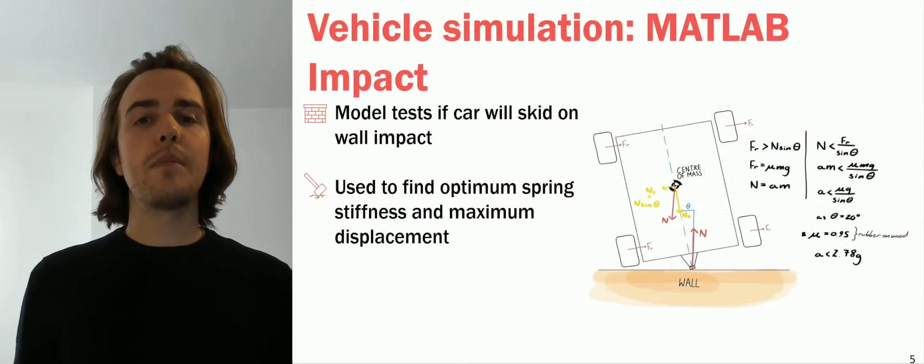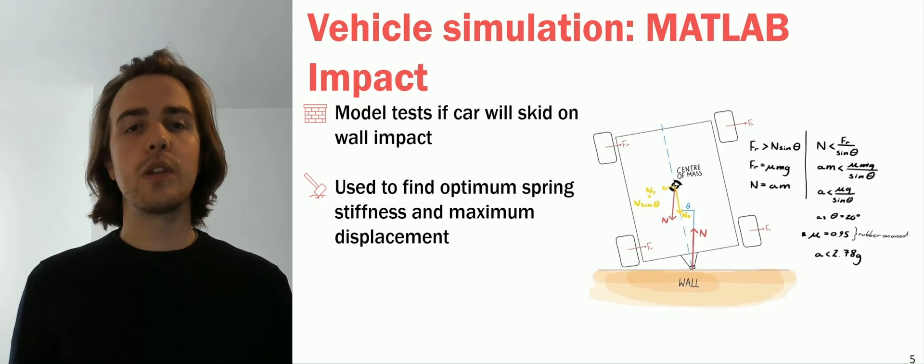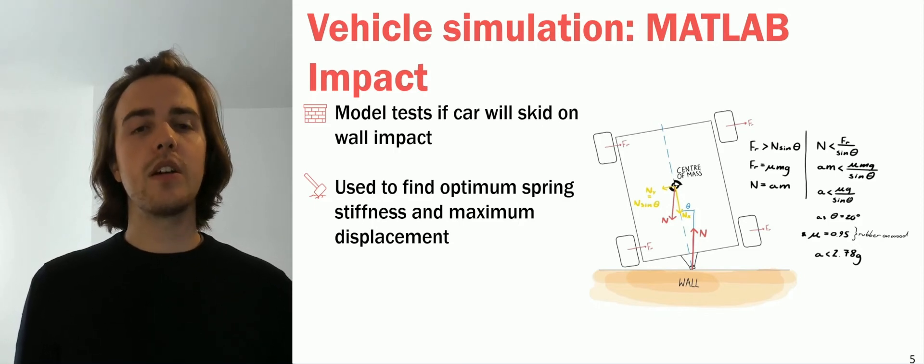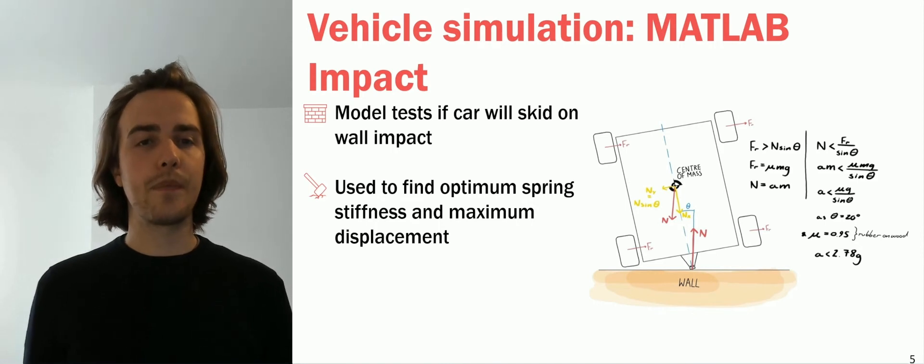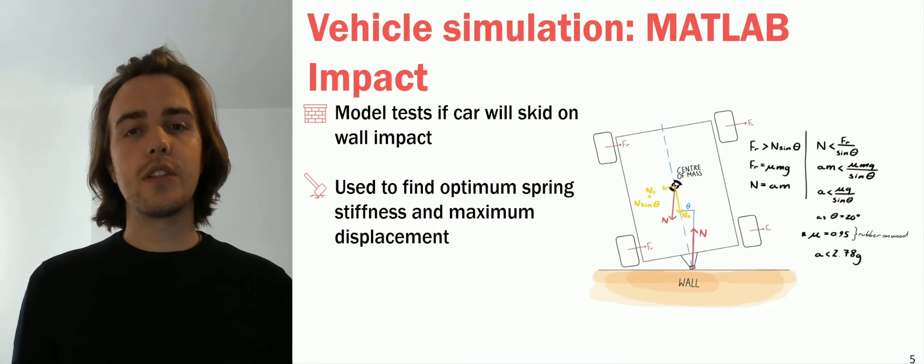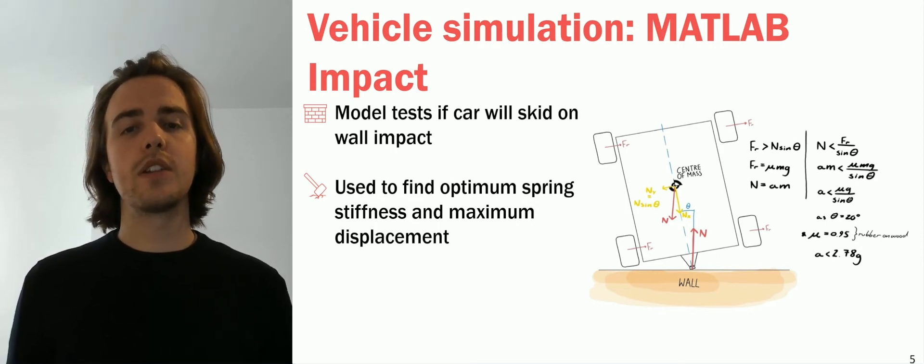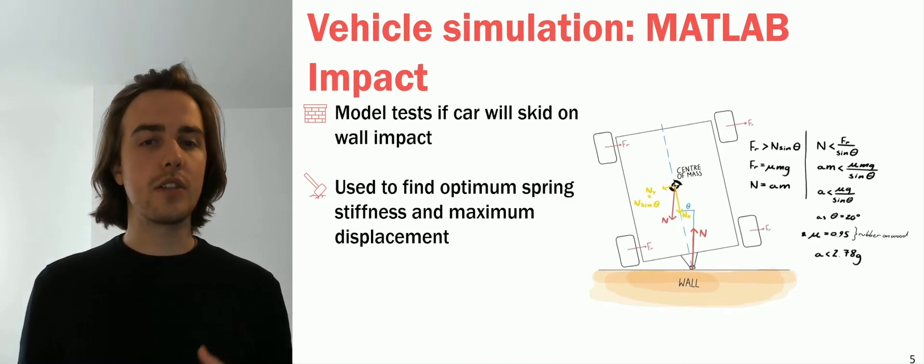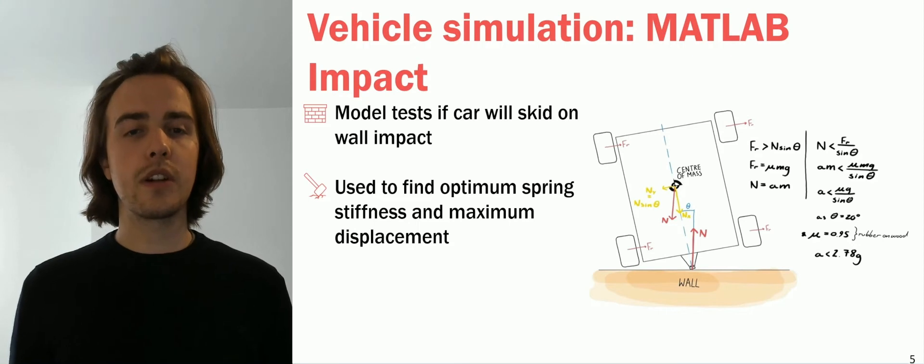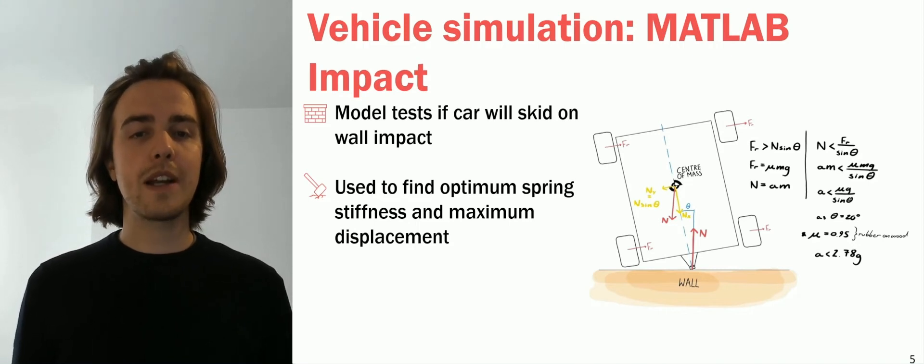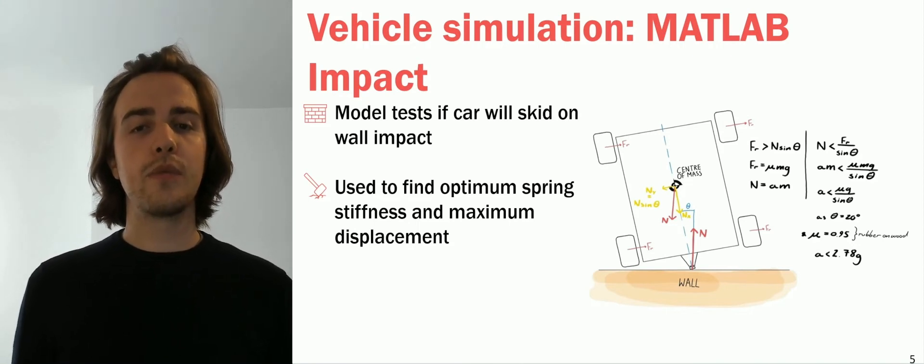We also used the MATLAB model to study the impact of the vehicle with the wall. We wanted to prevent the car from skidding on impact, which would misalign it causing it to miss the target. We used hand calculations to define the problem and understand what we had to model. In MATLAB we could then test various factors such as the speed of the vehicle, the stiffness of the springs in our shock absorber, and the maximum displacement of the shock absorber, to find the best solution.